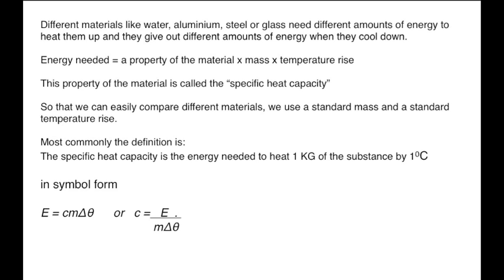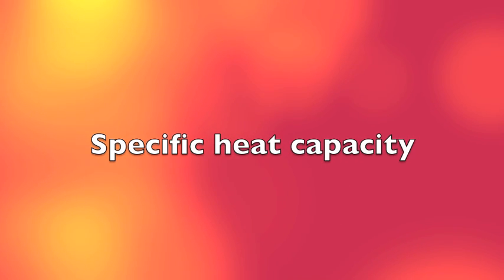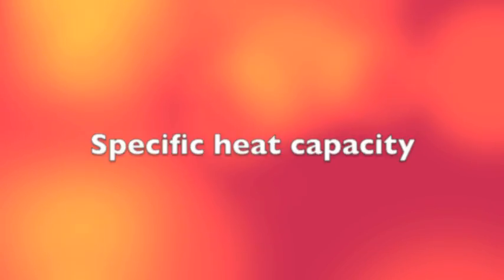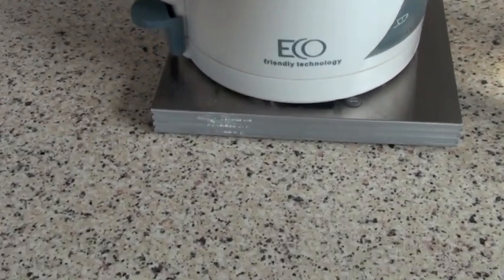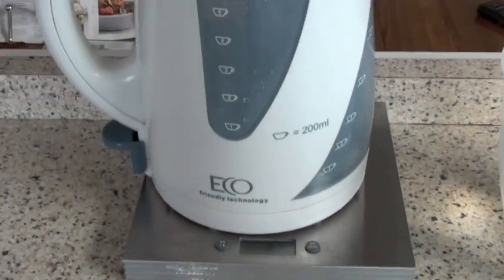In cooling down, a substance gives out exactly the same amount of energy as that required to heat it up. This following kitchen table demonstration is intended to demonstrate the process of finding specific heat capacity, rather than for obtaining an accurate value.